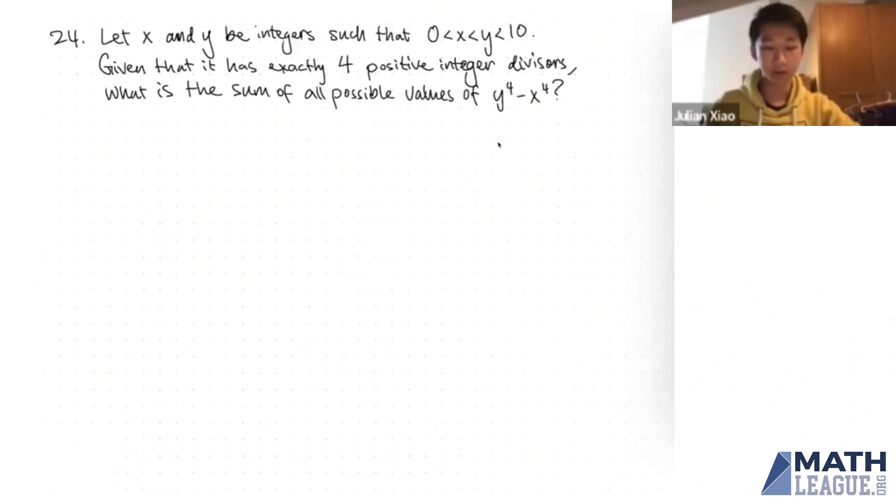Let x and y be integers such that 0 is less than x, which is less than y, which is less than 10. Given that it has exactly four positive integer divisors, what is the sum of all possible values of y to the 4 minus x to the 4?